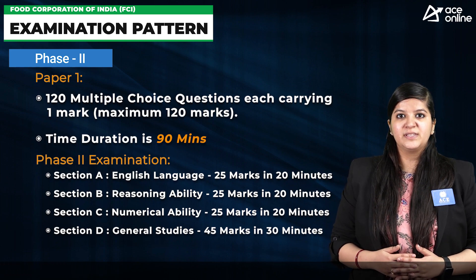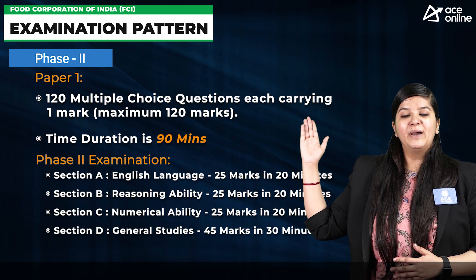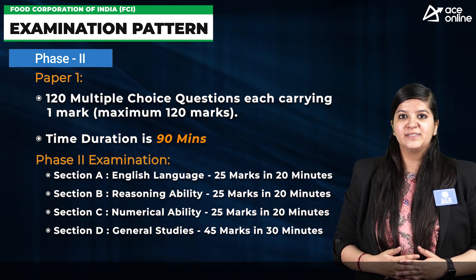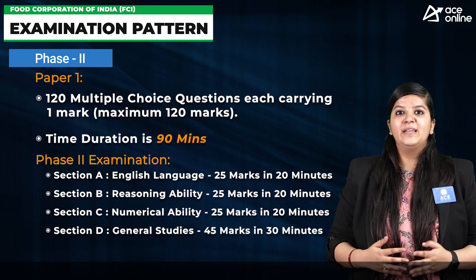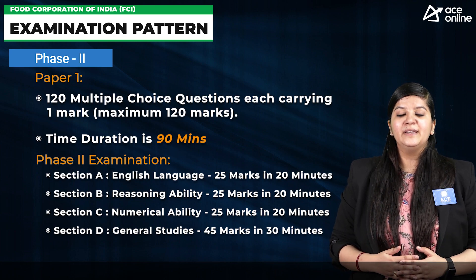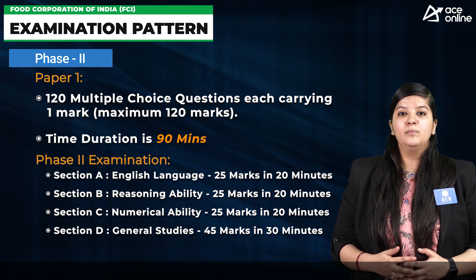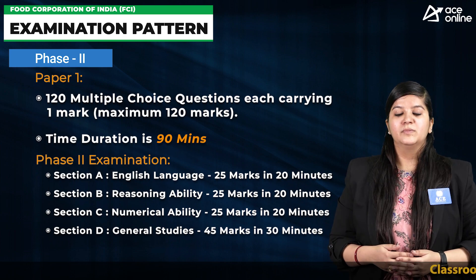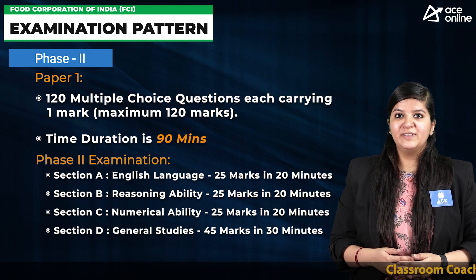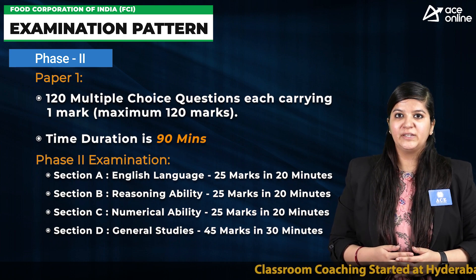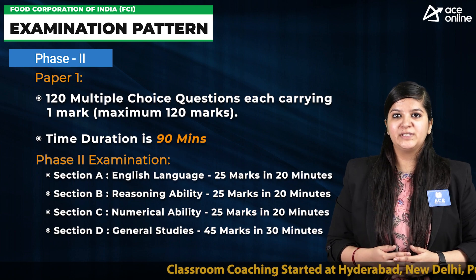In Paper 1, questions will be asked from four different sections: General English, Numerical Ability, Reasoning Ability, and General Studies. From General English, Reasoning, and Numerical Ability, 25 questions will be there of 25 marks each, with a time duration of 20 minutes per section. From General Studies, 45 questions will be there of 45 marks, with a total time duration of 30 minutes.